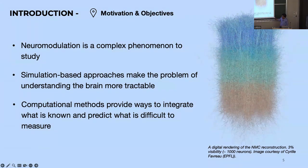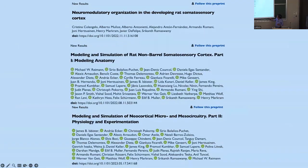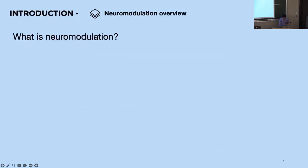Most of this detailed modeling work was done by my first PhD student, Christina Colangelo at EPFL, who graduated last year. This work builds on three preprints that are currently in the review process, identifying how neuromodulatory systems are organized in cortical microcircuits and how we can scale this up from one microcircuit to something bigger, like the somatosensory cortex.